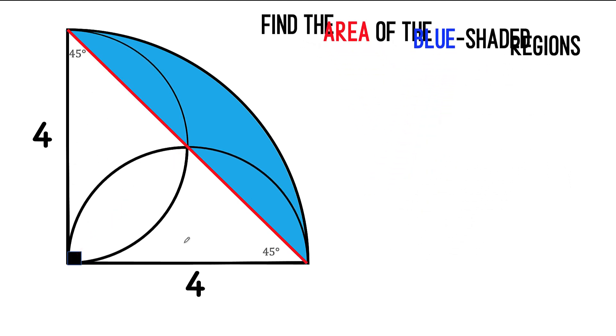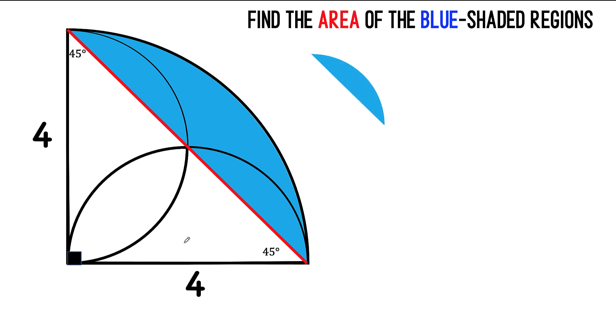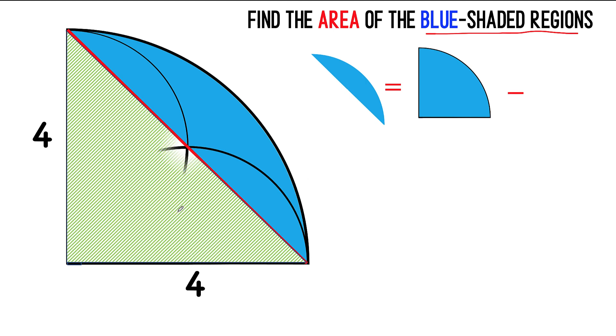So let's write that observation. We now say that the area of this blue shaded region, which is equivalent to the blue shaded region that we want to find, is equal to the difference between the area of the quarter circle minus the area of this right triangle.